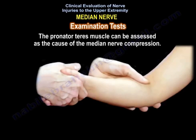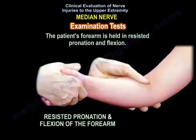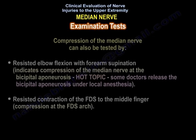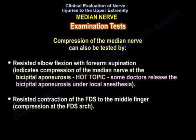The pronator teres muscle can be assessed as the cause of median nerve compression. Resisted forearm pronation with elbow extension tests for compression at the two heads of the pronator teres muscle — the patient's forearm is held in resisted pronation and flexion, then while remaining pronated, the forearm is gradually extended. Resisted elbow flexion with forearm supination indicates compression at the bicipital aponeurosis, which some doctors now release under local anesthesia. Resisted contraction of the flexor digitorum superficialis to the middle finger tests compression at the flexor digitorum superficialis arch.